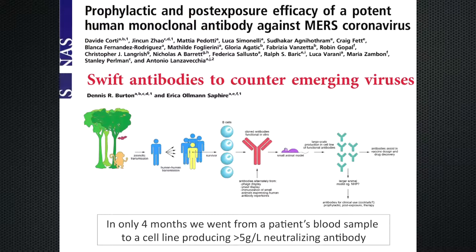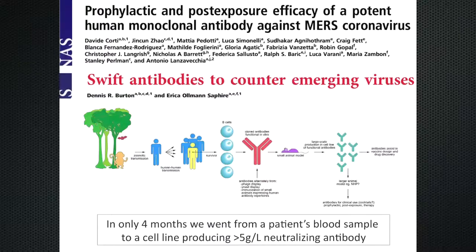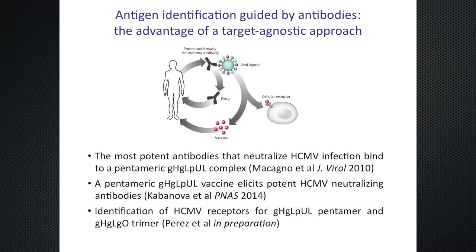One of the outputs of this approach is shown here. This is a recent paper, and here is the message: in only four months, we can go from a sample of a patient's blood to making a cell line that produces a MERS-neutralizing antibody at more than 5 grams per liter. This provides a very rapid reaction to emerging diseases like in this case.